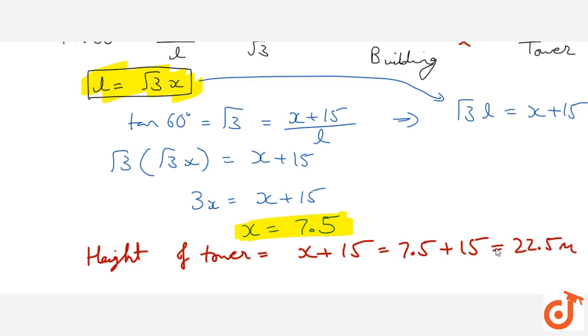We had distance between the towers, tower and building, so distance between tower and building, this was L is equal to root 3 times of x is equal to root 3 into 7.5 meters. You can calculate this numerical value and this is our final answer. Height of tower is 22.5 meters and distance between tower and building is 7.5 root 3 meters.